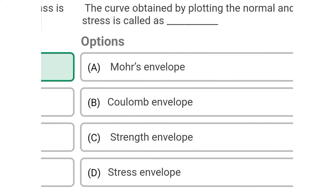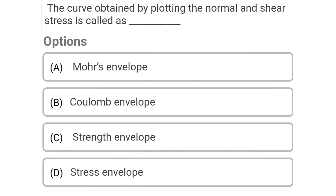Next question: The curve obtained by plotting the normal stress and shear stress is called — Option A: Mohr's envelope, Option B: Coulomb's envelope, Option C: strength envelope, Option D: stress envelope. The correct answer is Option C: strength envelope.